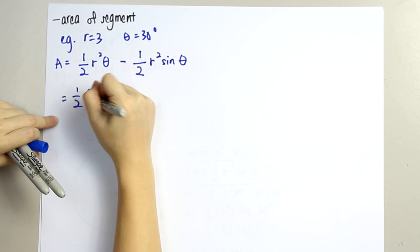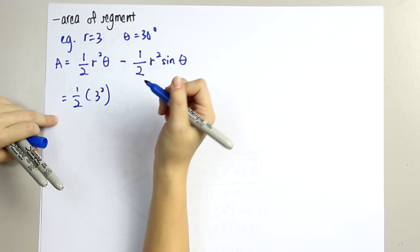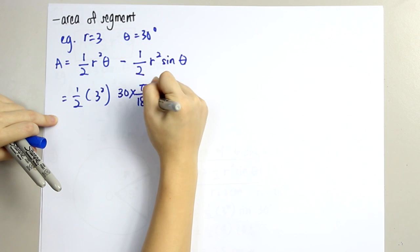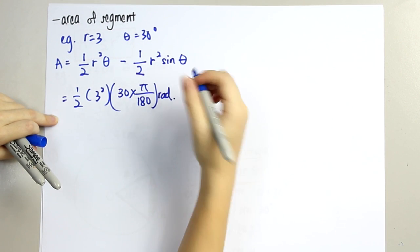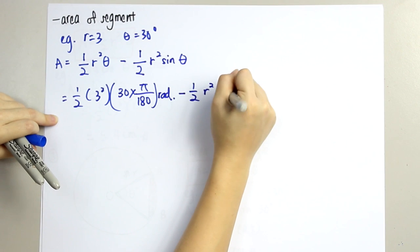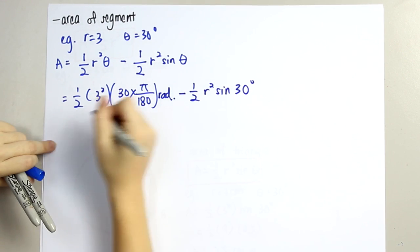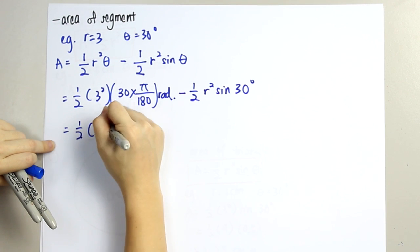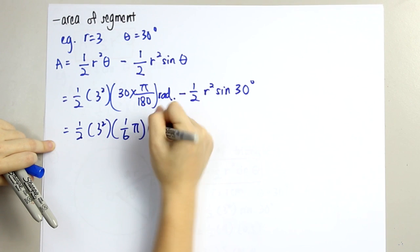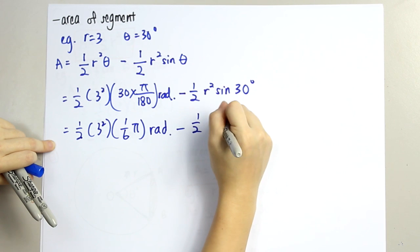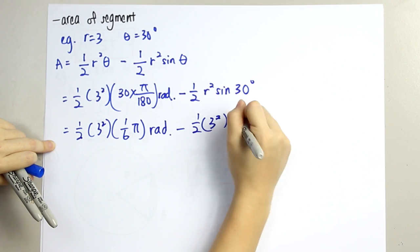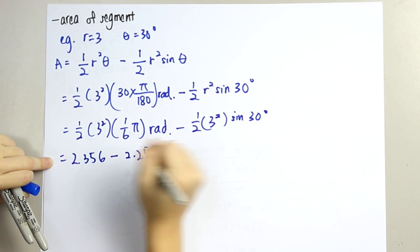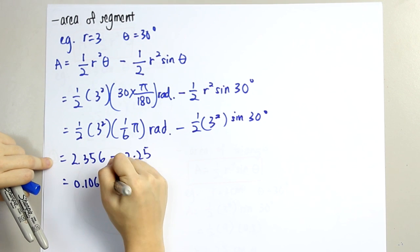We calculate: 1 over 2 times 3 squared times theta — converting 30 degrees to radian by taking 30 times pi over 180 — minus 1 over 2 times 3 squared times sin 30 degrees. This gives us 1 over 2 times 9 times 1 over 6 pi, minus 1 over 2 times 9 times sin 30 degrees, which equals 2.356 minus 2.25, giving us 0.106 cm squared.